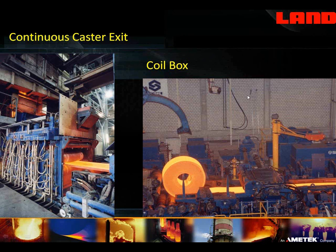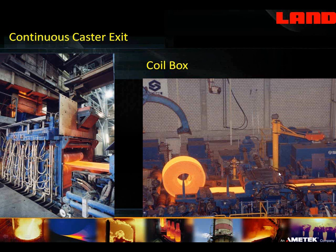This next photo is one of a coil box, again in a strip mill. Here we have a scanner mounted on an arm above the strip, checking and displaying temperature from edge to edge of that strip. This particular arm was a very nice design done by the engineering company who did the installation — it allowed the scanner to be swung out of position for maintenance on the line, and then quickly swung back into position into the same alignment.